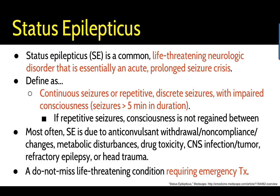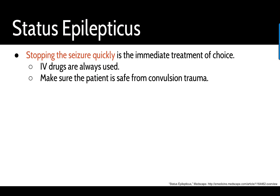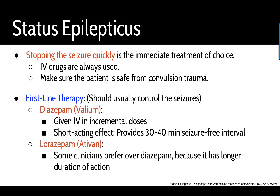This is a do-not-miss, life-threatening condition and you want to act very quickly. Stopping the seizure involves IV drugs — starting an IV and pushing the appropriate drug. There's a specific regimen with first-line, second-line, and third-line options. First-line therapy — benzodiazepines — should control the seizures for the majority of patients. The options are diazepam, given IV in incremental doses, and lorazepam, given as one IV dose and repeated if needed.